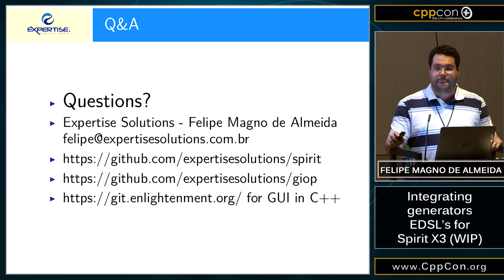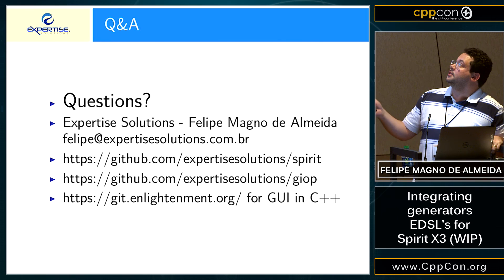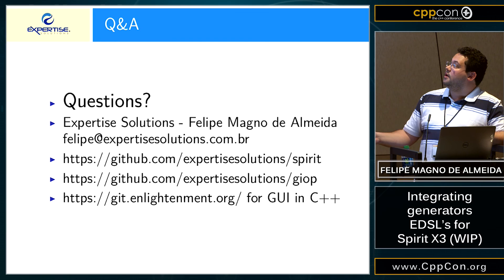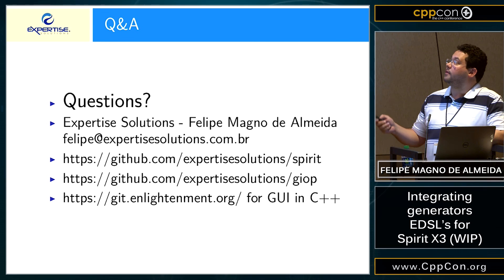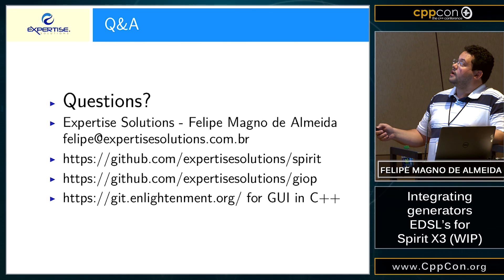Any questions? I finished a little bit early. The code for the Spirit X3 generators is at the URL shown. The GIOP definition for generators using Spirit X3 is also available. If you want to know more about Expertise Solutions — we also do development inside the Enlightenment project. You can send me an email at the address shown. We're from Brazil. Thank you.